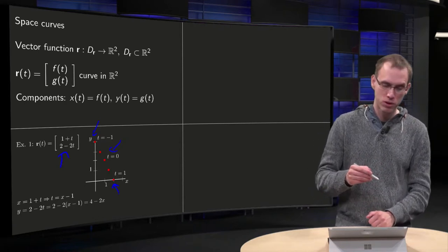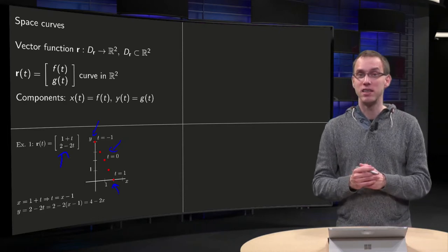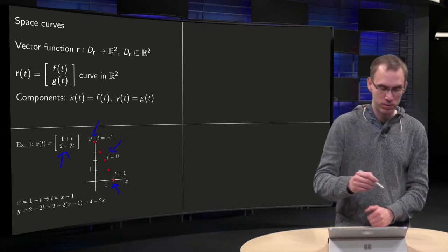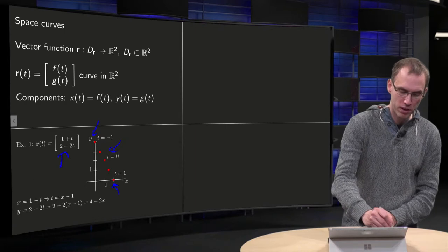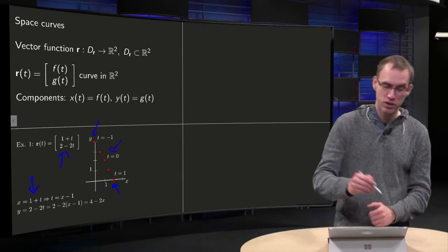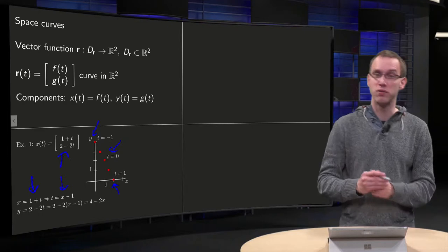And we can check that, of course, by eliminating the T from our vector function. Because we have x equals 1 plus T, we can solve for T, then we get T equals x minus 1.